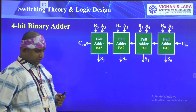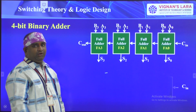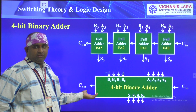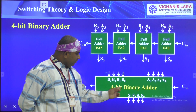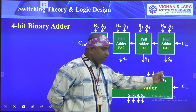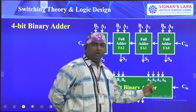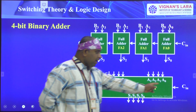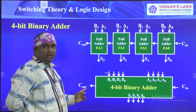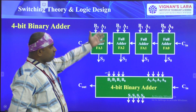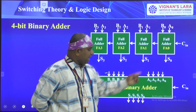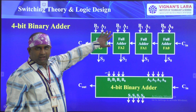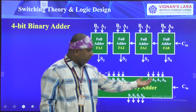This is the normal binary addition process. For easy drawing purposes, I am representing the four-bit binary adder as a single block labeled 'four-bit binary adder,' with four input signals a3 a2 a1 a0 on one side and b3 b2 b1 b0 on the other. The internal connections are the same — this block representation is just for convenience.